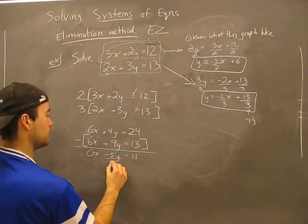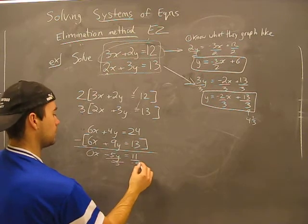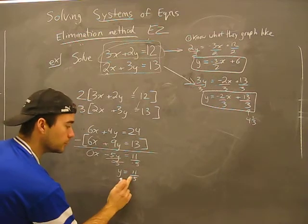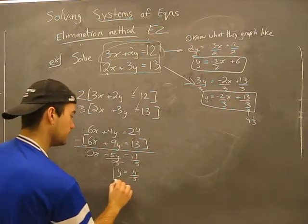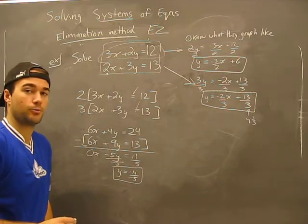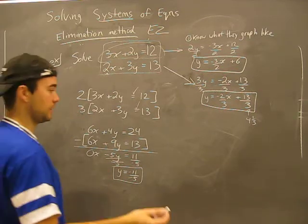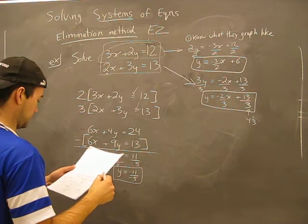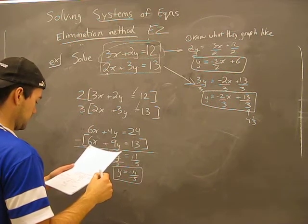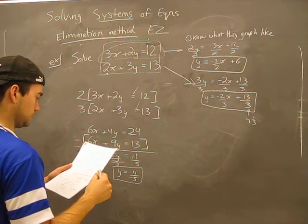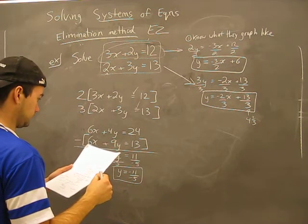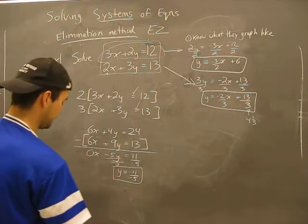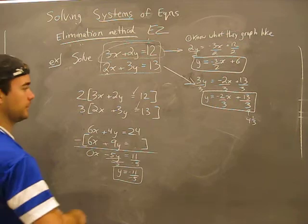Now I'm just going to solve for Y. Wait — am I on the money with this? I made a mistake somewhere. Here's my mistake — this should be 39.